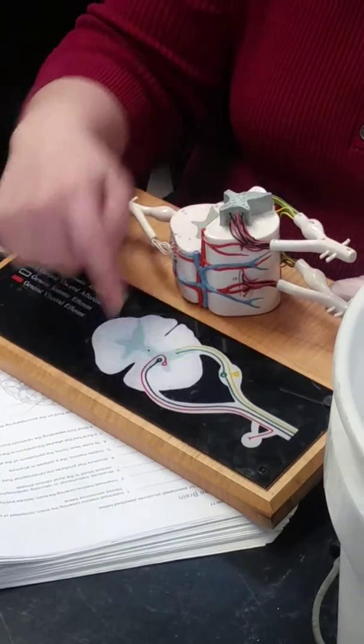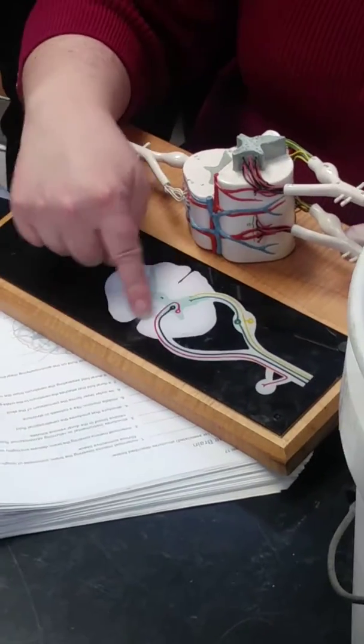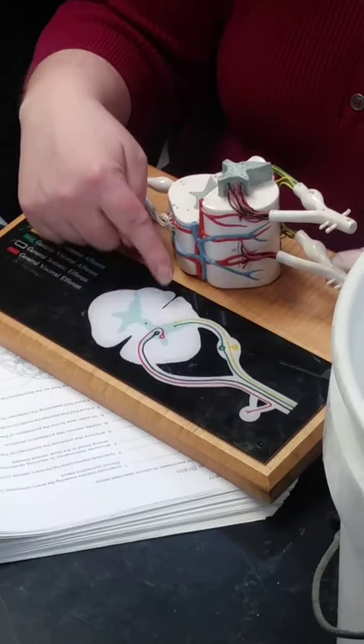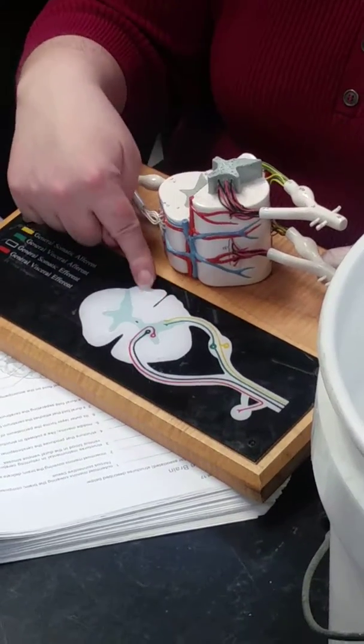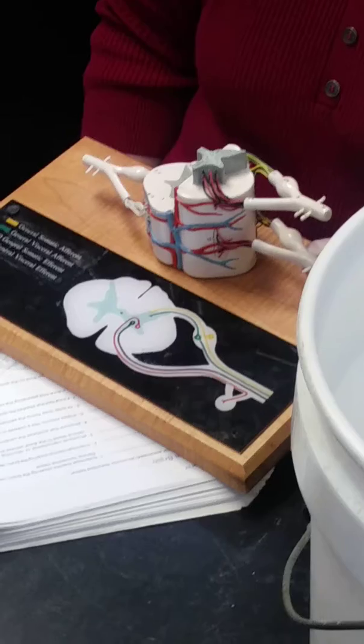The cleavage, anterior median fissure, the butt crack is the posterior median sulcus. And that's it.